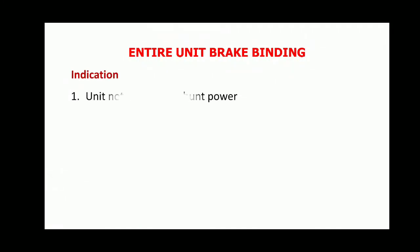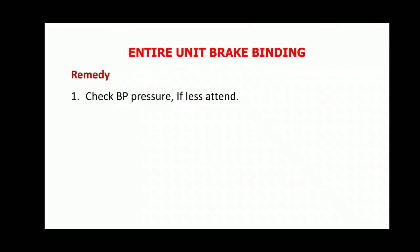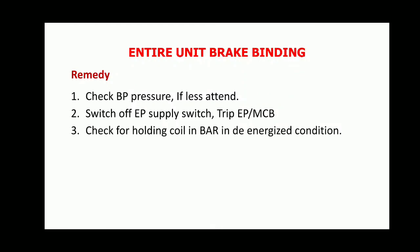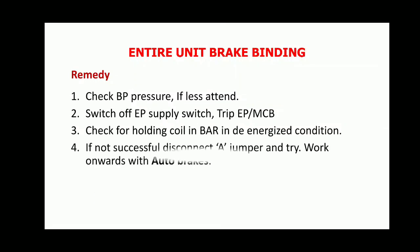Entire unit brake binding. Indication: unit not moving on shunt. To release entire unit brake binding, check BP pressure — if it is less, attend it. Switch off EP supply switch. Trip the five-arm MCB for EP. Check that the holding coil in the brake application relay is in de-energized (DNHZ) condition. If unsuccessful, disconnect the A jumper cable and try, then work onwards with auto brakes.